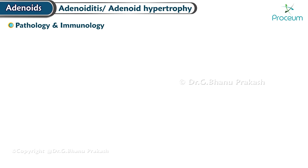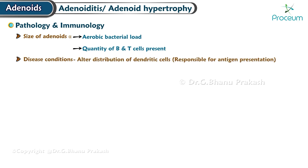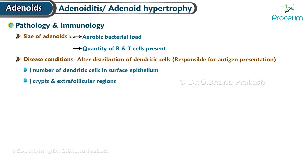Pathology and immunology: In addition to normal growth, the size of the adenoids has been observed to correlate with the aerobic bacterial load and the quantity of B and T cells present. Disease conditions can alter the distribution of dendritic cells, which are responsible for antigen presentation. During such instances, there is a decrease in the number of dendritic cells in the surface epithelium and an increase in the crypts and extra-follicular regions.